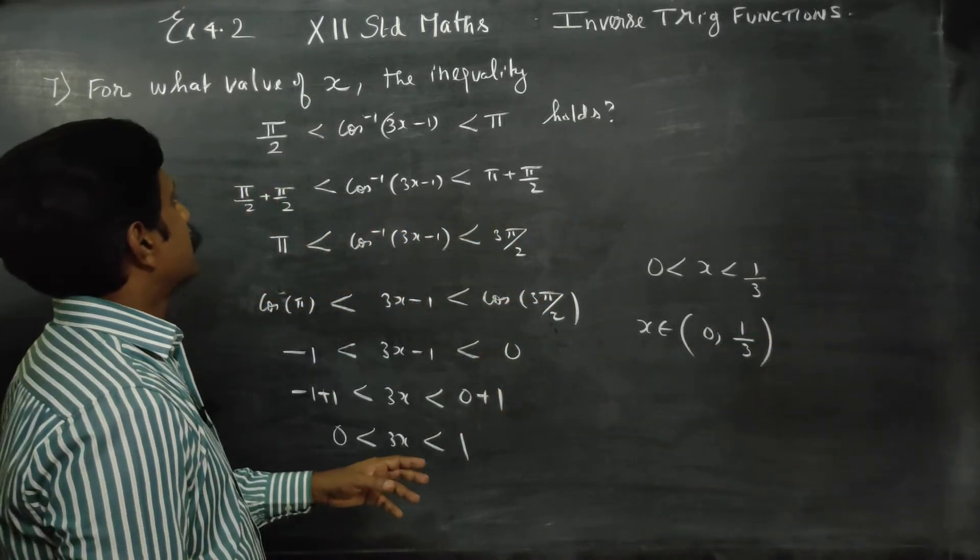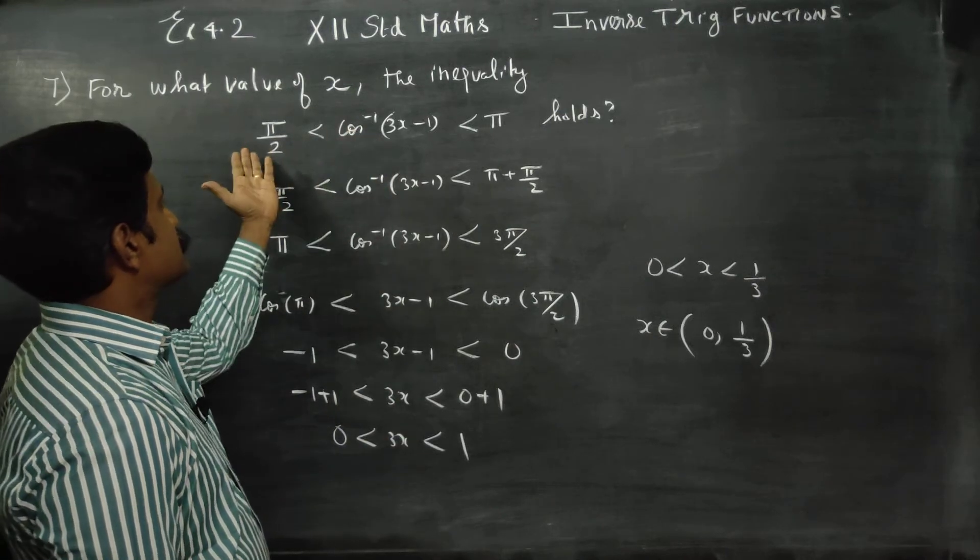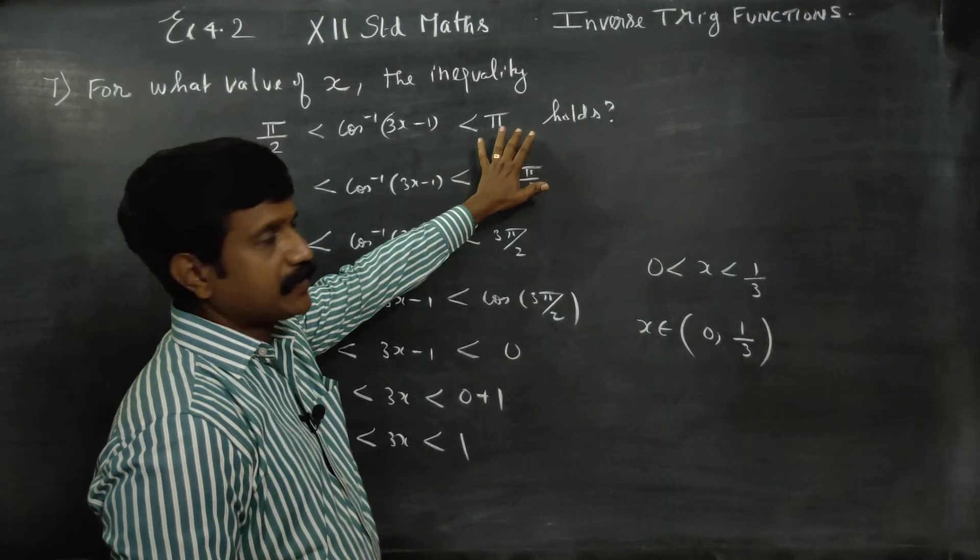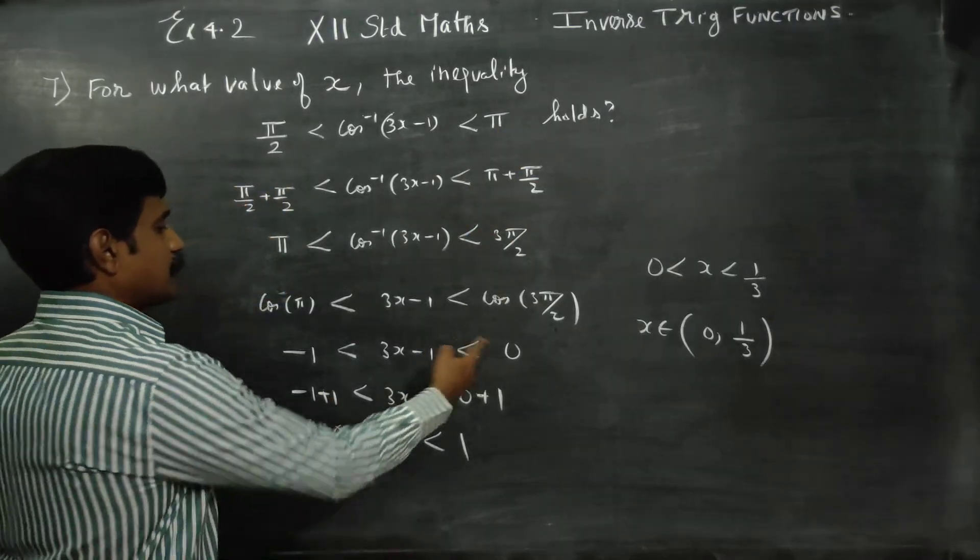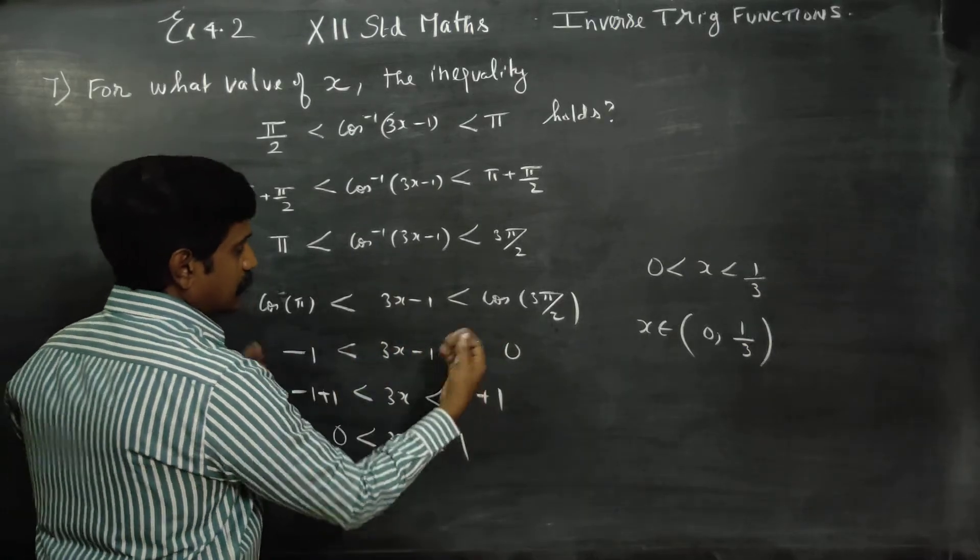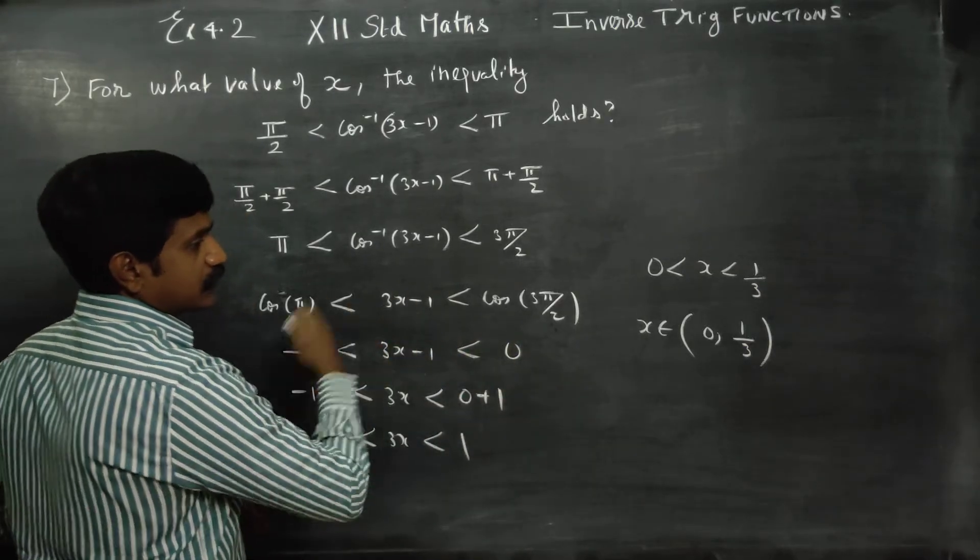You can also do this directly. Cos inverse of cos 90 degrees or cos inverse of cos 180 degrees. In the inequality, 0 and minus 1 lie between minus 1 and 0.